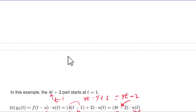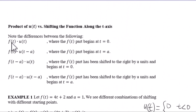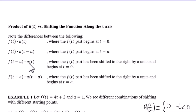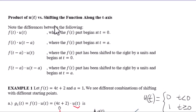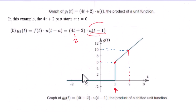Let me summarize the four cases. Case 1: f(t)·u(t) - no shifting, starts at 0. Case 2: f(t)·u(t-a) - starting point is shifted to the right at a units, original function. Case 3: f(t-a)·u(t) - starting point is at 0 but the function is shifted to the right by a units. Case 4: f(t-a)·u(t-a) - both the starting point and the function are shifted to the right. In our example, a equals to 1.